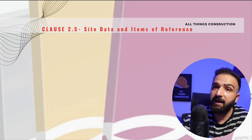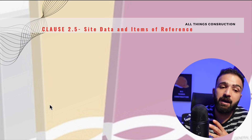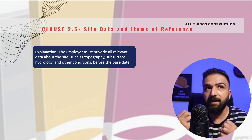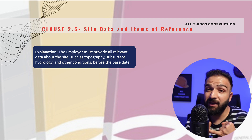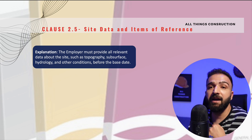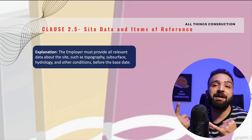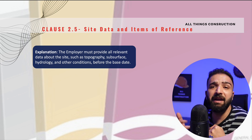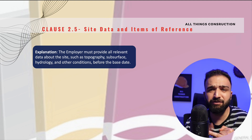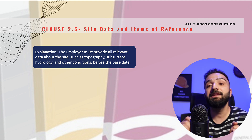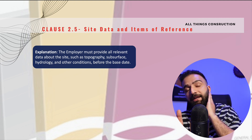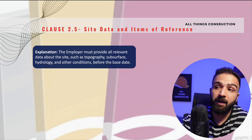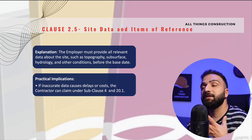The title of Clause 2.5 is Site Data and Items of Reference. What this clause effectively says is that the employer is obliged to provide the contractor with accurate and complete site data and items of reference. These might include geological, hydrological, environmental and other structural information — for example, soil reports — and this must be done before the base date or any other date set out in the contract.